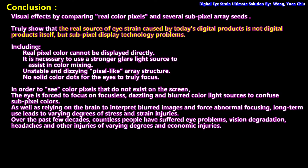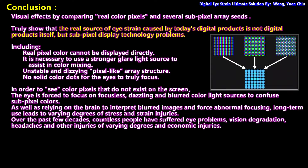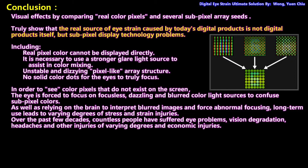Conclusion: Visual effects comparing real color pixels and several sub-pixel array types truly show that the real source of eye strain caused by today's digital products is not the digital products themselves, but sub-pixel display technology problems. These include: real pixel color cannot be displayed directly; a stronger glare light source is needed to assist in color mixing; unstable and dizzying pixel-like array structure; no solid color dots for the eyes to truly focus on. The eye is forced to focus on focusless, dazzling, and blurred color light sources to confuse sub-pixel colors.